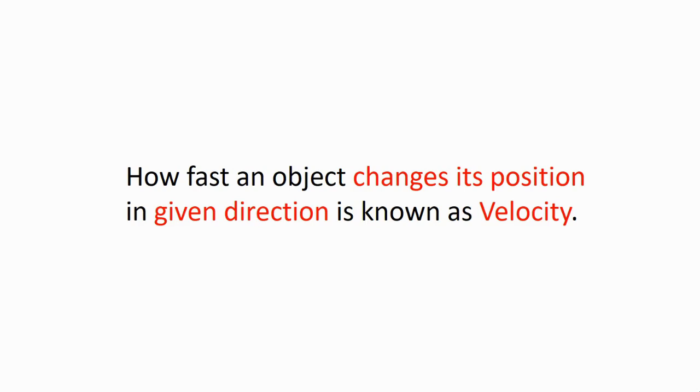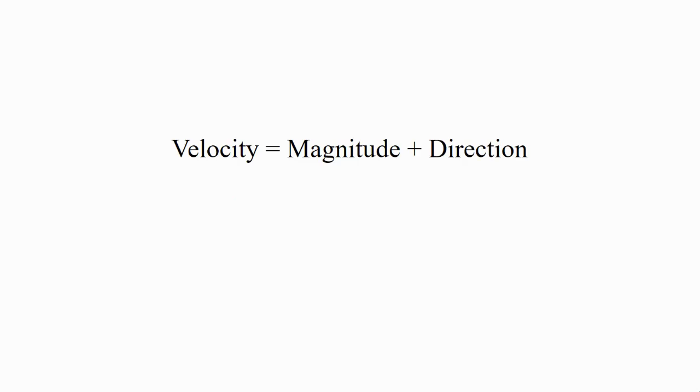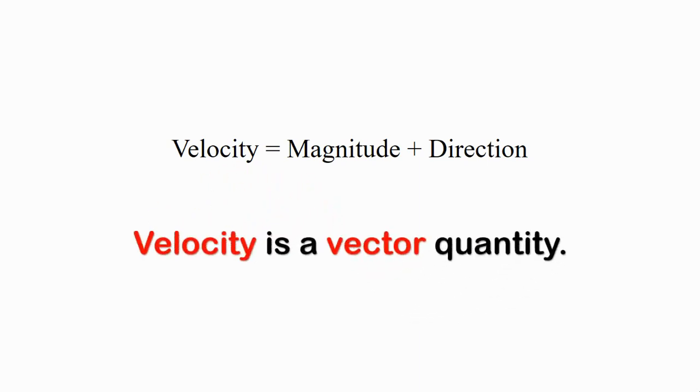How fast an object changes its position in a given direction is known as velocity. Velocity, hence, depends upon magnitude and direction. Velocity is a vector quantity.